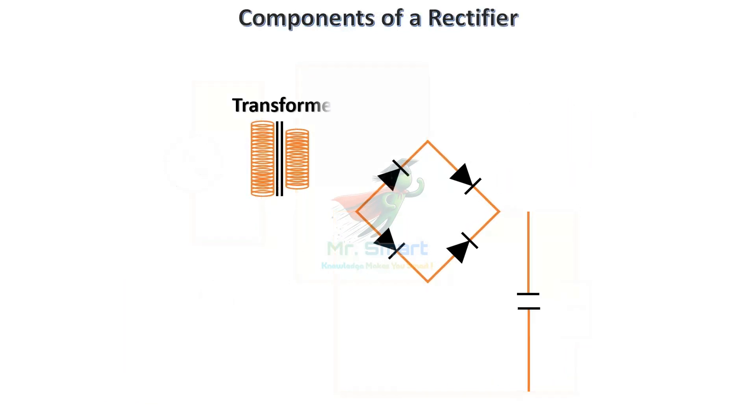Let's see what are the key components and how they work together in a rectifier. The key components of a rectifier circuit include a transformer, diodes, and a filter.